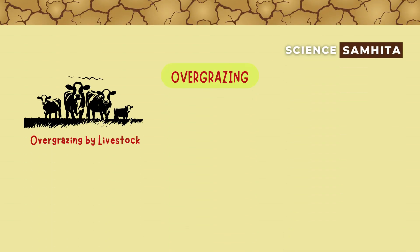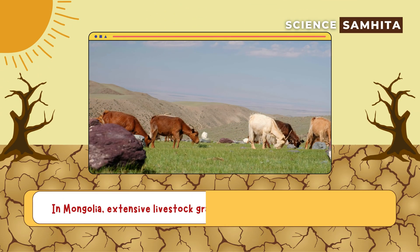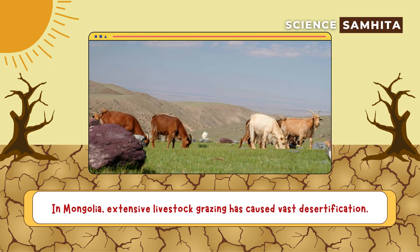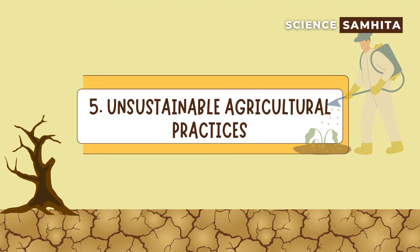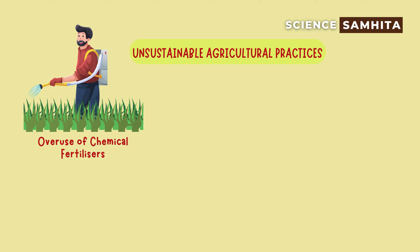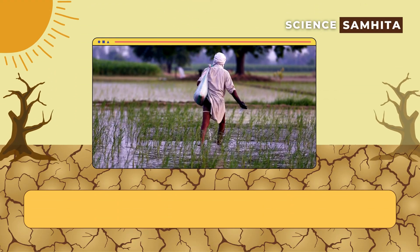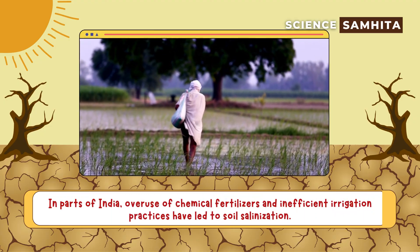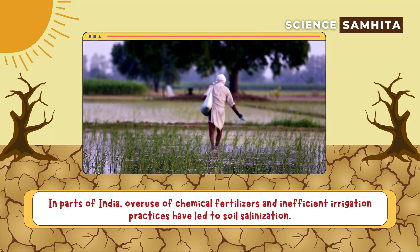Fourth, overgrazing. Livestock grazing beyond the land's capacity prevents vegetation recovery. For example, in Mongolia, extensive livestock grazing has caused vast desertification. Fifth, unsustainable agricultural practices. Overuse of chemical fertilizers and inadequate irrigation degrade soil quality. For example, in parts of India, overuse of chemical fertilizers and inefficient irrigation practices have led to soil salinization.